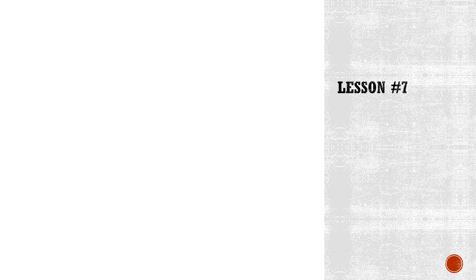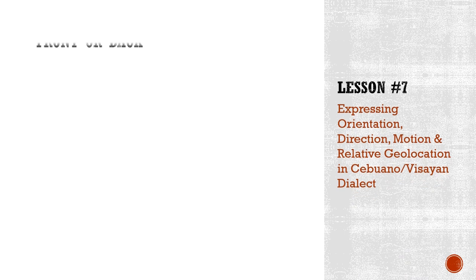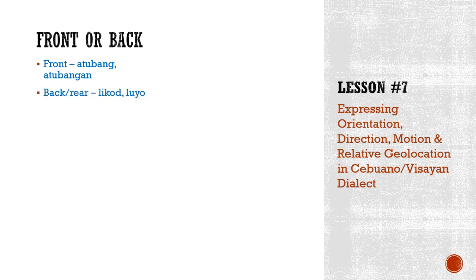Let's continue with more basic words that reference direction. Now let's have front or back. When you say front, that's translated to atubang or atubangan. And when you say back or the rear, you say likud. Sa likud — or some people would also use luyo. Whether you say likud or luyo, that represents the rear portion or rear side.